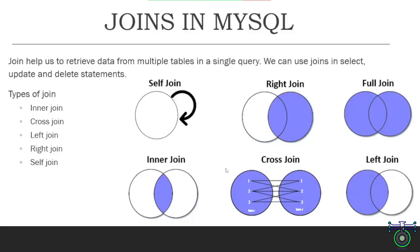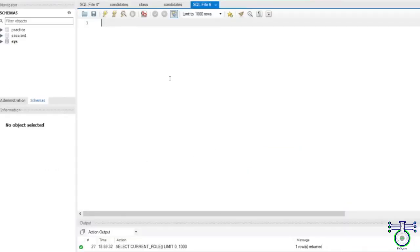And the inner join, which we also call the intersection of two tables — the common part will be your result set.